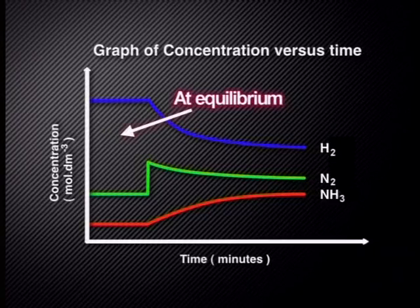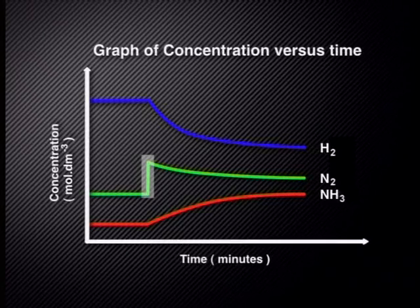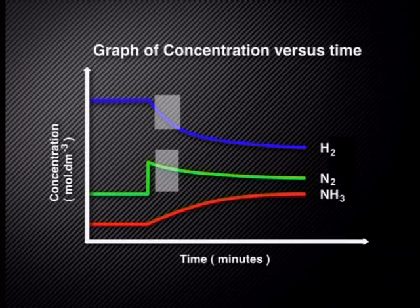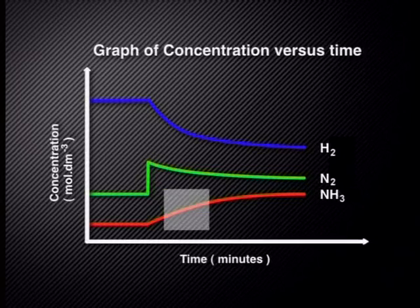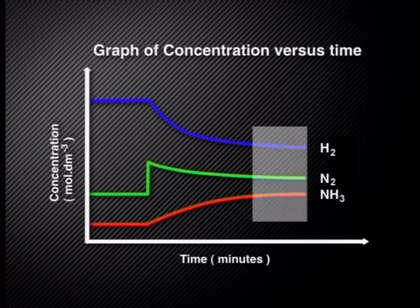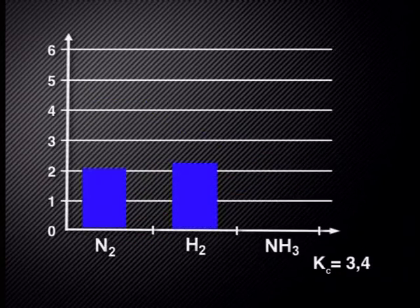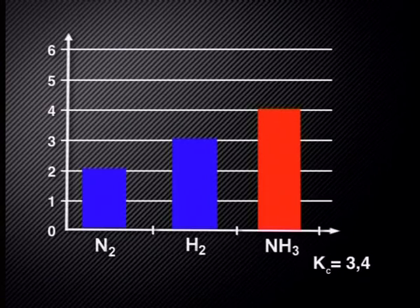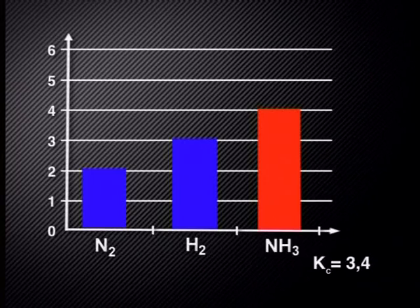On the equilibrium concentration-versus-time graph, we see that products and reactants have already reached equilibrium. There is an immediate spike of nitrogen when we add more. The forward reaction is favored — nitrogen and hydrogen react more, causing a decrease in their concentrations, while ammonia production increases. A new equilibrium is established without changing the equilibrium constant. The equilibrium constant remains the same because if the concentration of a reactant suddenly increases, the product concentration will also increase accordingly.